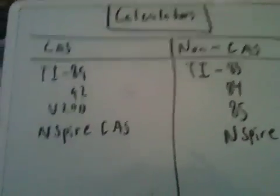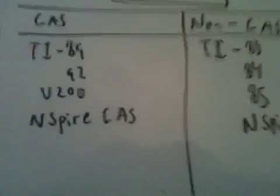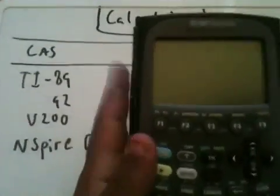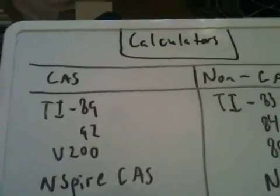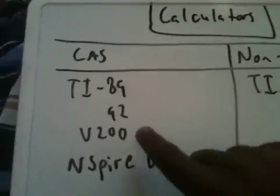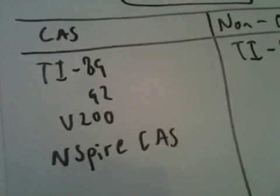Alright, so there are different types of CAS computer algebra systems in Texas Instruments. I have a TI-89 Titanium, and I plan to be using this for AP Calculus this year. There's also the TI-92, which is now discontinued. It's been replaced by the Voyager 200, commonly called the V-200. And then there's the Inspire CAS.